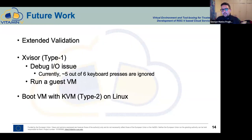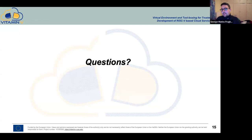Our future steps are to extend our validation with more tests. For Xvisor, we have to solve the input/output issue — currently approximately five out of six keyboard presses are ignored. After we solve this, we can run a guest virtual machine on Xvisor, and then we're aiming to boot a virtual machine with KVM, which is a type-2 hypervisor on Linux.